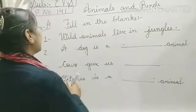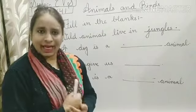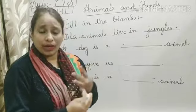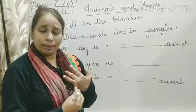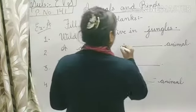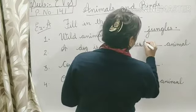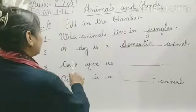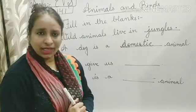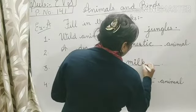Next: A dog is a DASH animal. A dog is a domestic animal — we keep dogs in our home. So the answer is domestic: D-O-M-E-S-T-I-C. Next: Cows give us milk.